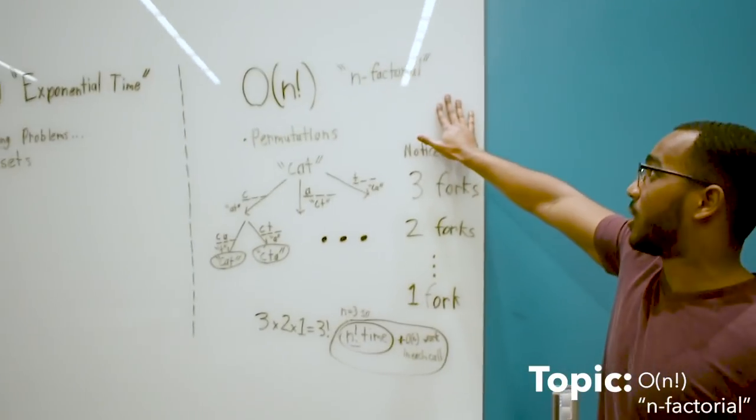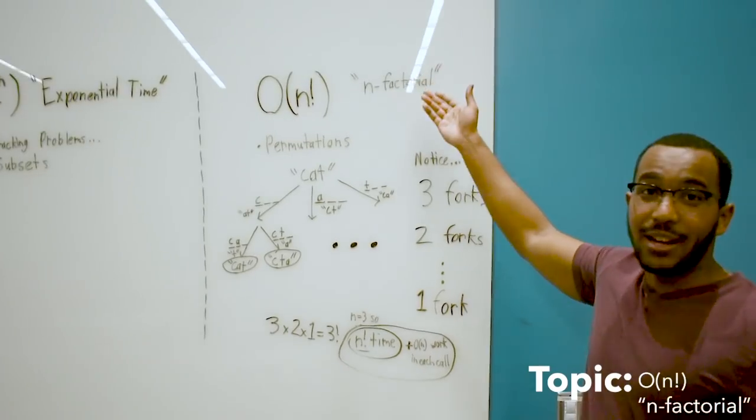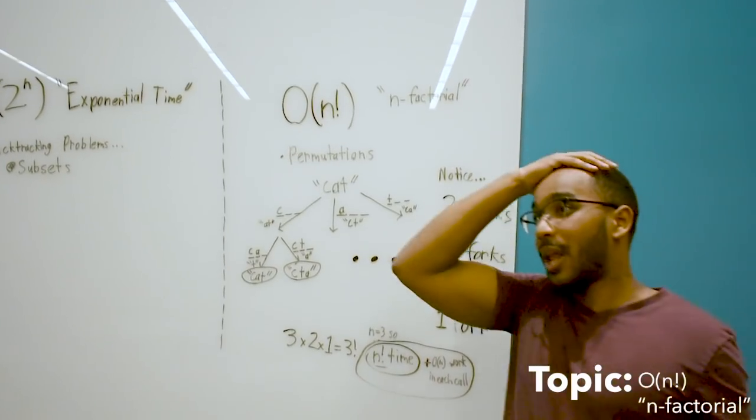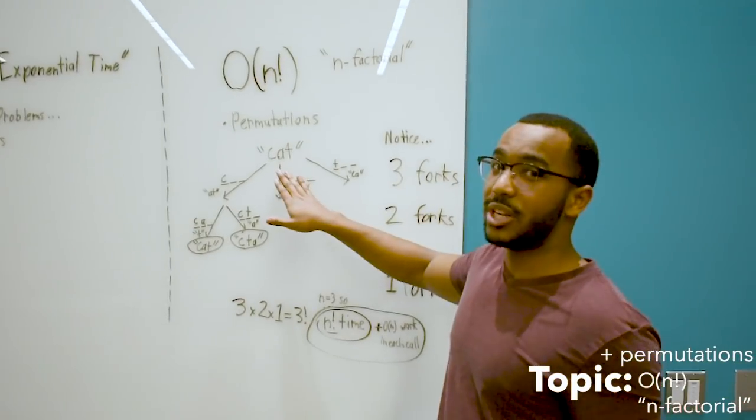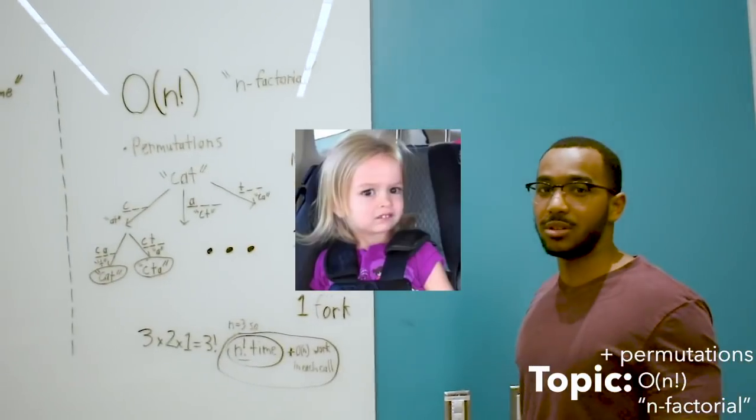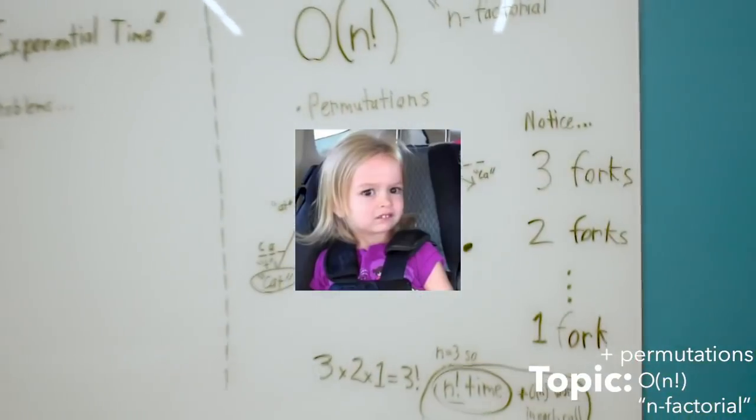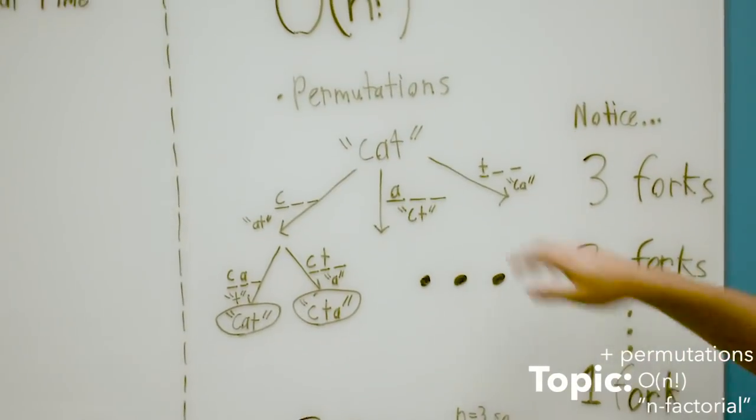Finally, we have factorial time. This is called n factorial. You'll see this time complexity when calculating things like permutations. Here's a really good example. So we have CAT.